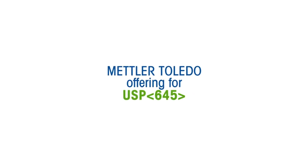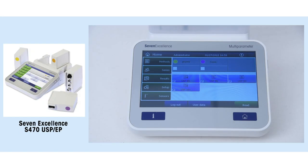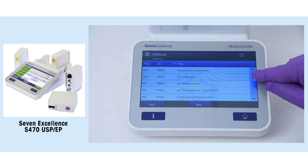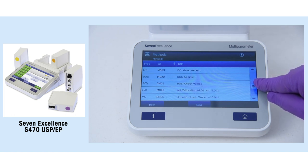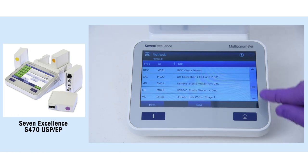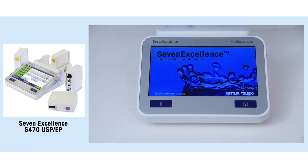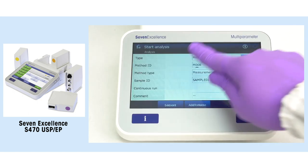Mettler Toledo, as always, has come with complete solutions for its customers following USP 645. You can choose our standalone system, offering easy execution of all three stages with ready-to-use, predefined methods that guide you throughout the whole process. Just turn on the instrument, connect the sensor, select the desired method, and start the analysis.